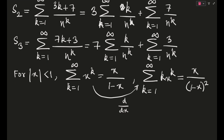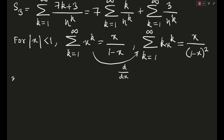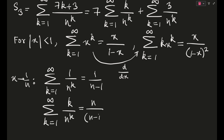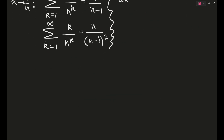Now we replace x with 1/n in these two expressions. We get: σ(k=1 to ∞) (1/n)^k = 1/(n−1), and σ(k=1 to ∞) k/n^k = n/(n−1)². So we can now easily substitute these into S2 and S3.